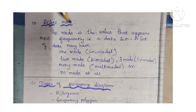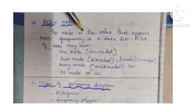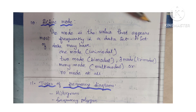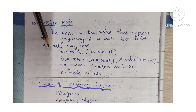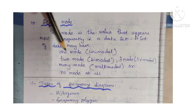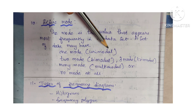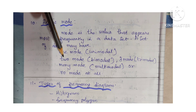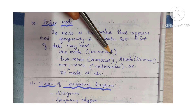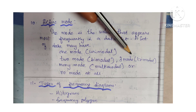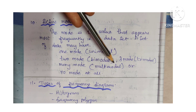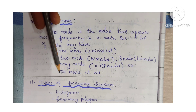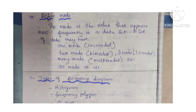Next is define mode. The mode is the value that appears most frequently in a data set. A set of data may have one mode (unimodal), two modes (bimodal), three modes (trimodal), many modes (multimodal), or no mode at all.